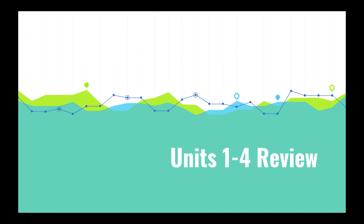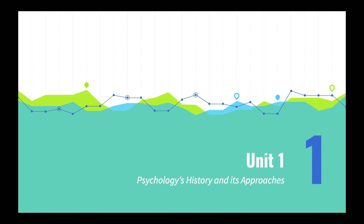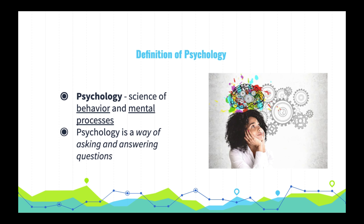Alright Abe, start us off. Gladly. Let's start with Unit 1, Psychology's History and Its Approaches. Given that you're taking an AP Psychology course, you should definitely know the definition of psychology. It's the science of behavior and mental processes. Behavior is anything done by a living organism. Mental processes are internal experiences that we cannot observe, but which we can infer from behavior. And don't forget that psychology is a science — it's more a way of asking and answering questions than it is a fixed set of findings.